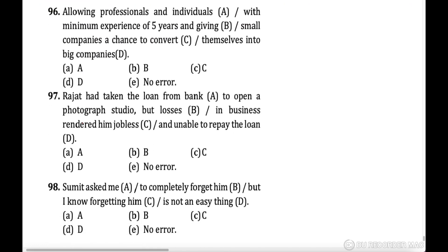Next question: 'Allowing professionals and individuals with minimum experience of five years and giving small companies a chance to convert themselves into big companies.' Here 'allowing' and 'giving' both have -ing, so parallelism is maintained. 'Themselves' is used for companies, which is a plural noun. 'Into big companies' — companies is a noun, big is an adjective.